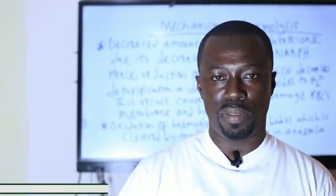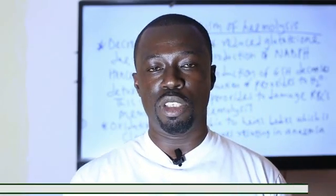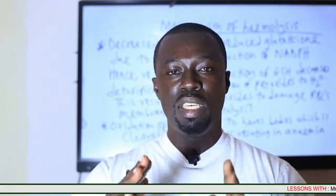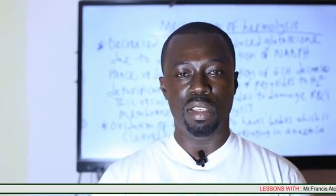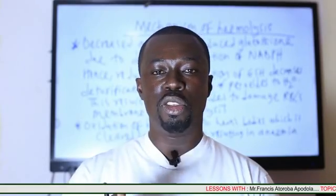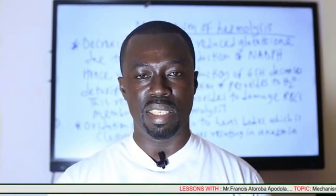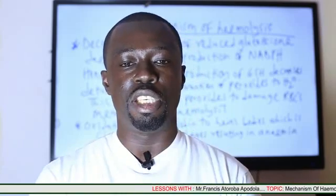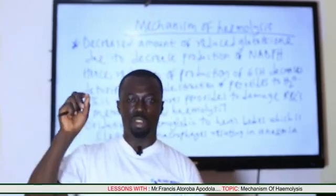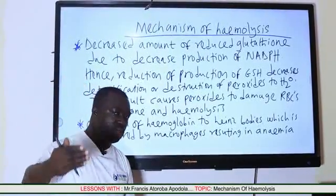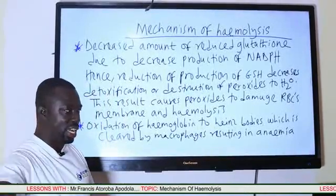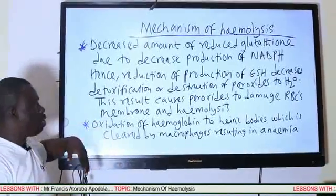Previously, we looked at the mechanism or the physiology by which the GCSPD enzyme is able to protect the red blood cells from becoming oxidant damage. In today's lesson, we are going to look at the mechanism of hemolysis in GCSPD-deficient individuals — how the deficiency results in hemolysis and hence hemolytic anemia. So, the mechanism of hemolysis.